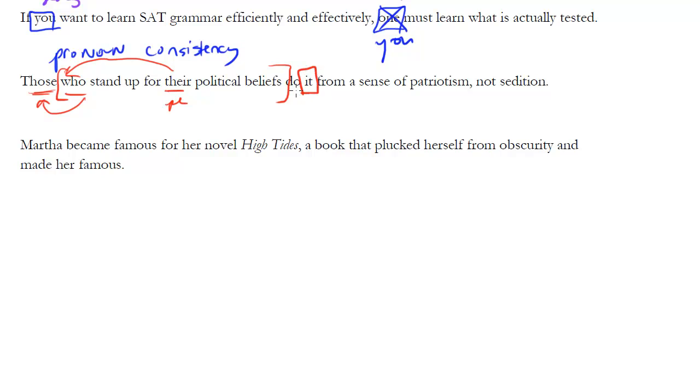Remember, whenever you see 'it,' be skeptical. So here, what is 'it' referring to? You might say it's referring to standing up for political beliefs, but wait a minute. The sentence doesn't have the noun 'standing up for their political beliefs'—here it's just part of this clause. You would have to literally have that noun in the sentence, and you don't have that here. This is what I mentioned before about context. We know from context what the 'it' is referring to; that's not the issue. On the SAT this is wrong because it's not referring to anything specific in the sentence itself as a noun. We could change this to 'do so'—those who stand up for their political beliefs do so from a sense of patriotism. There's other ways to rewrite the sentence, but the point is we cannot use 'it' here.